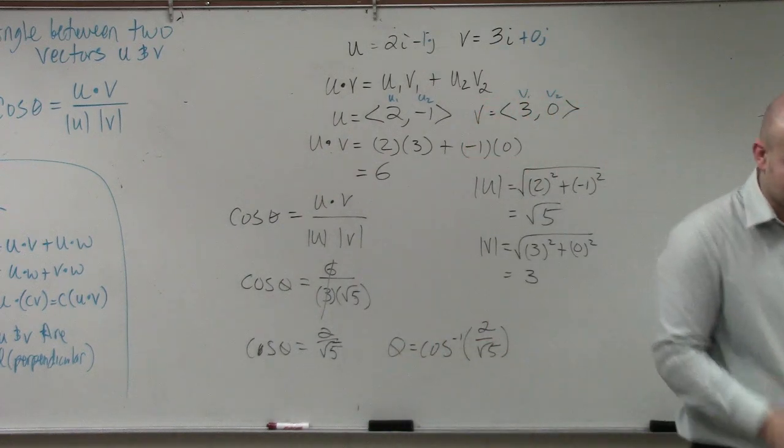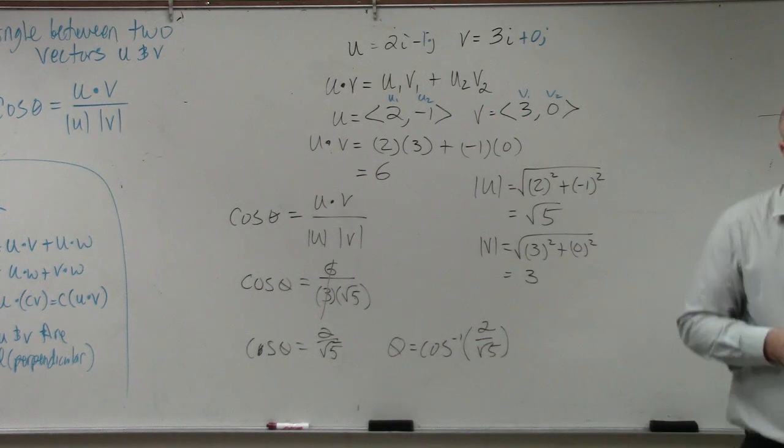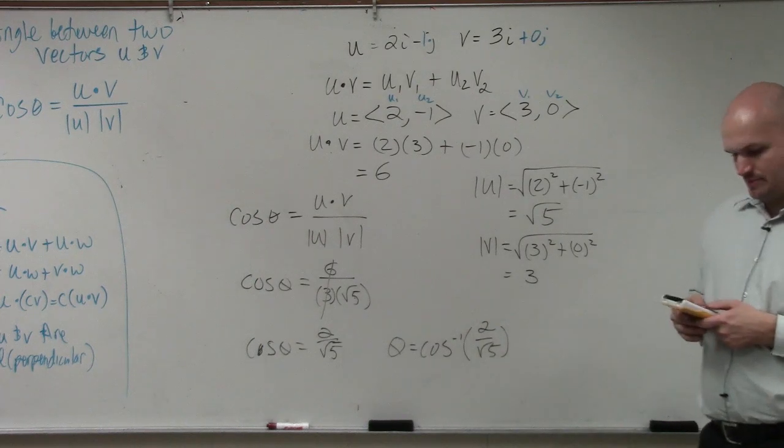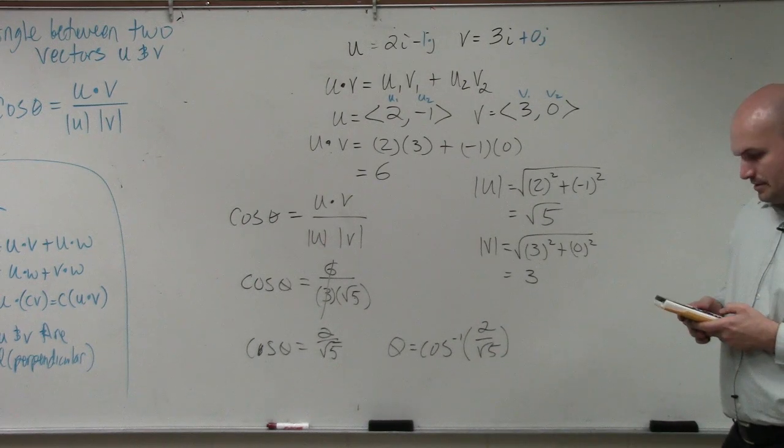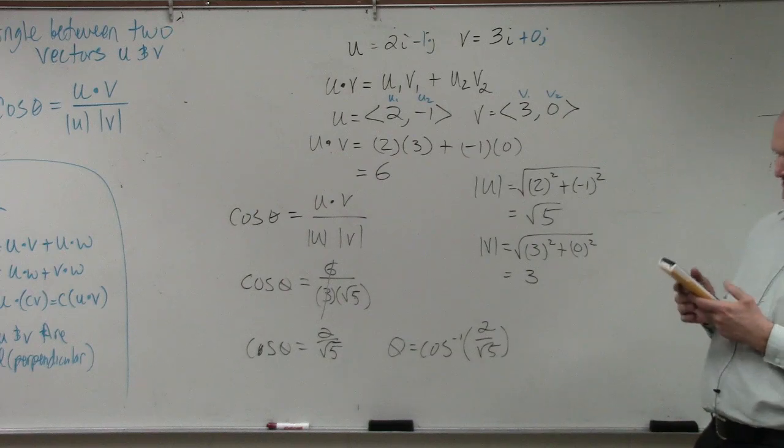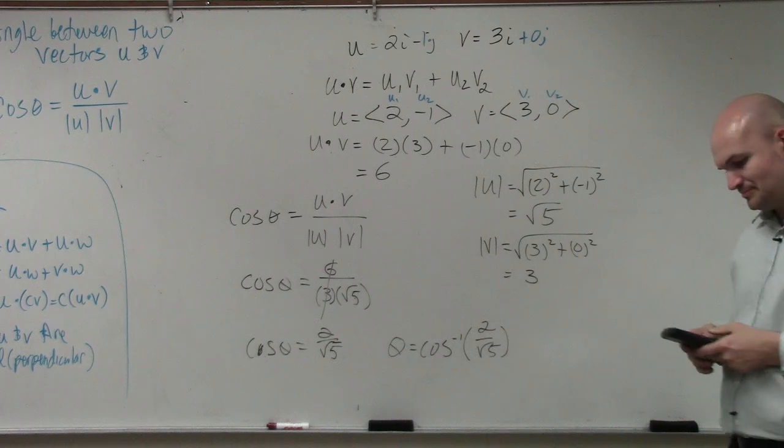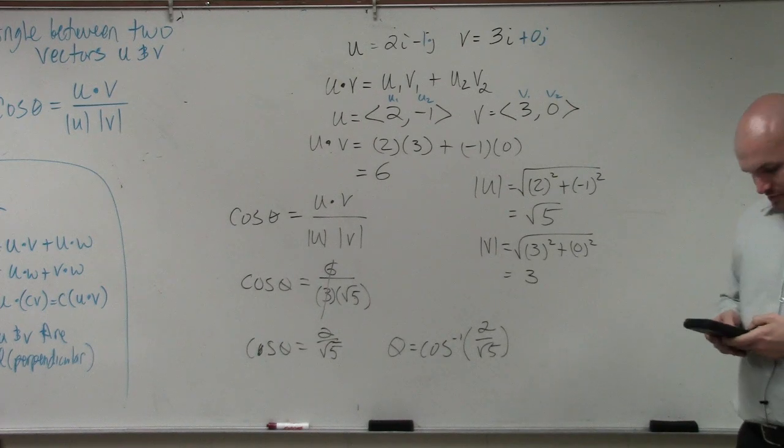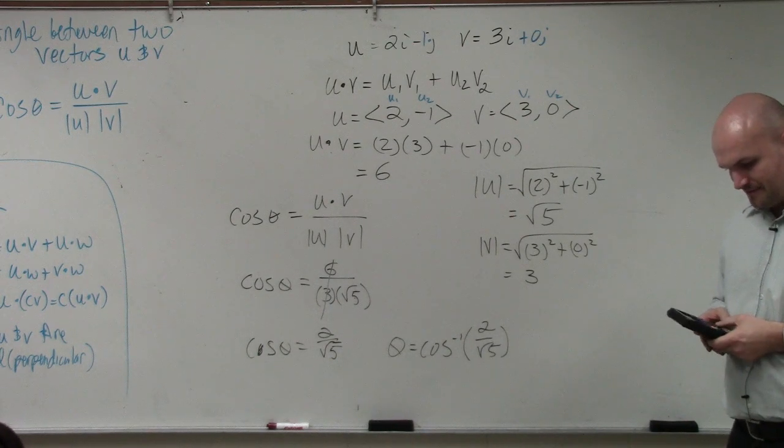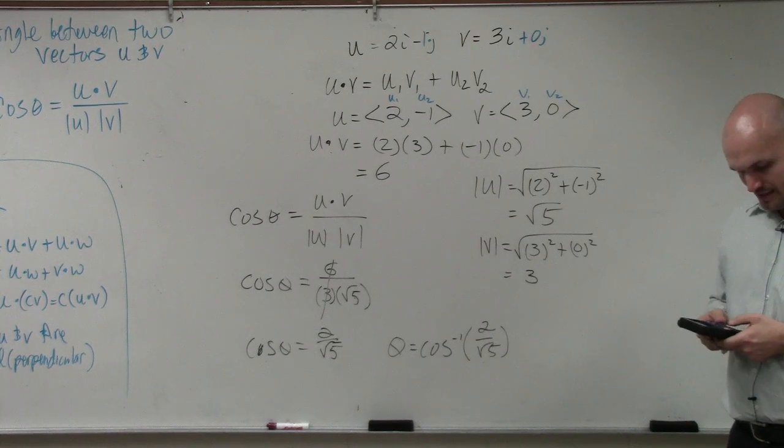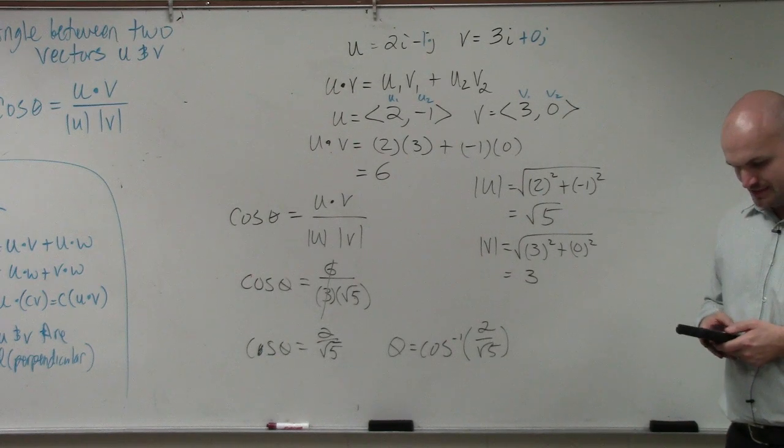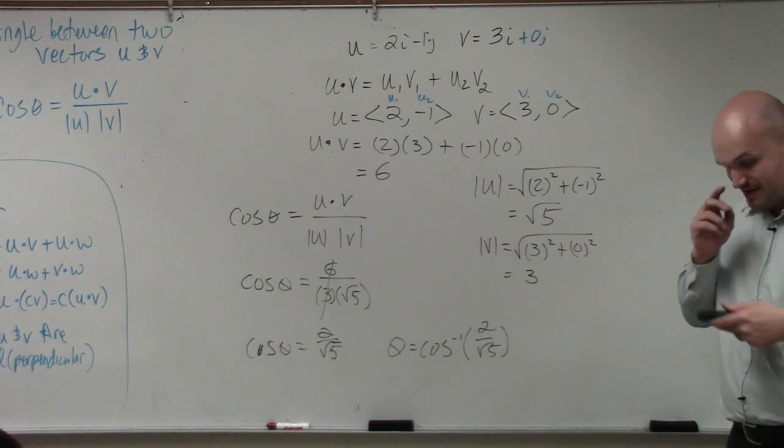So we have to go back to our calculator. Battery's low. Calculator's done. Can I borrow yours? Thank you. You're in the right mode, I assume? So we do 2 divided by the square root of 5, and then we do cosine inverse of our answer, and we get 26.56.